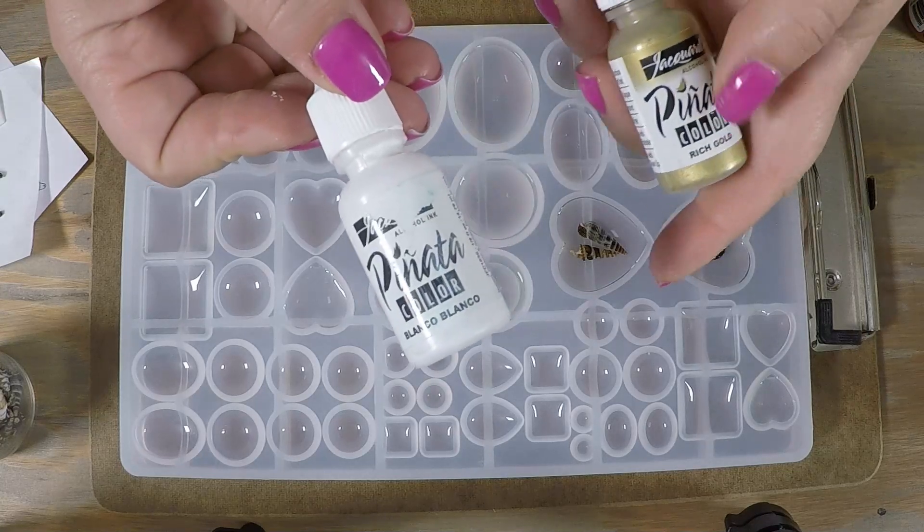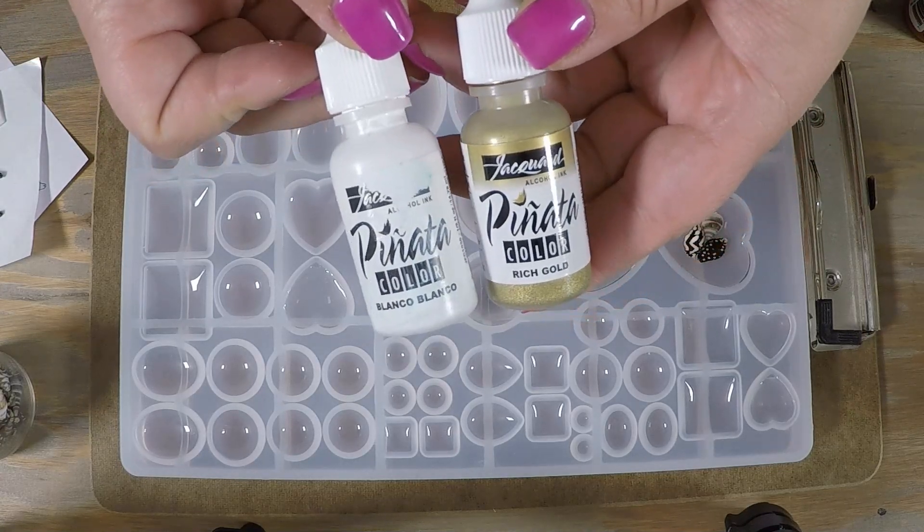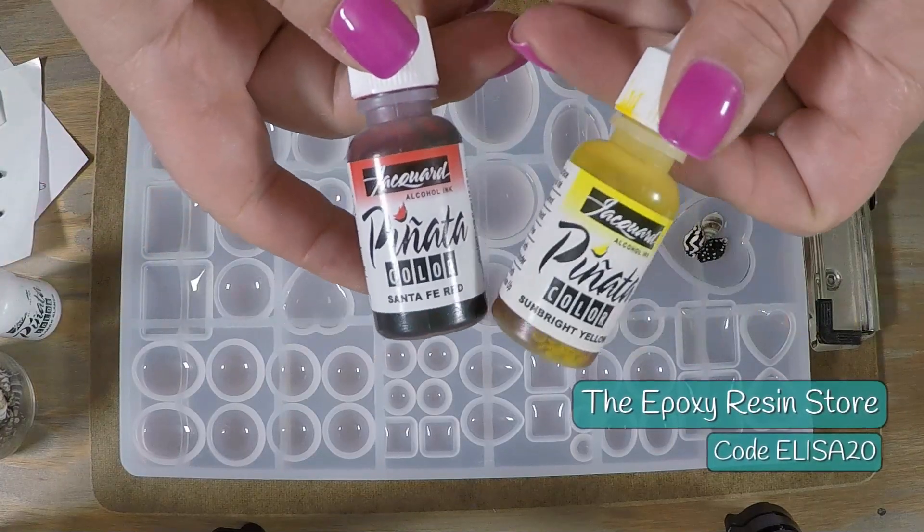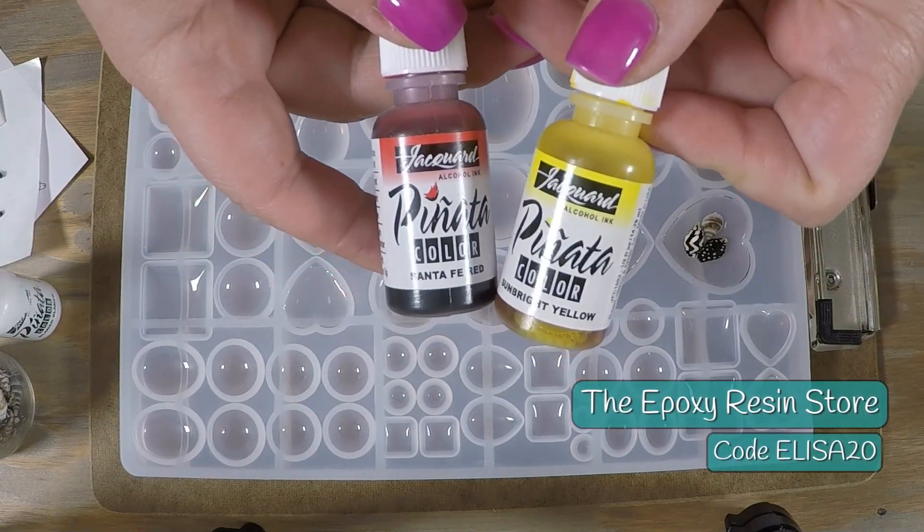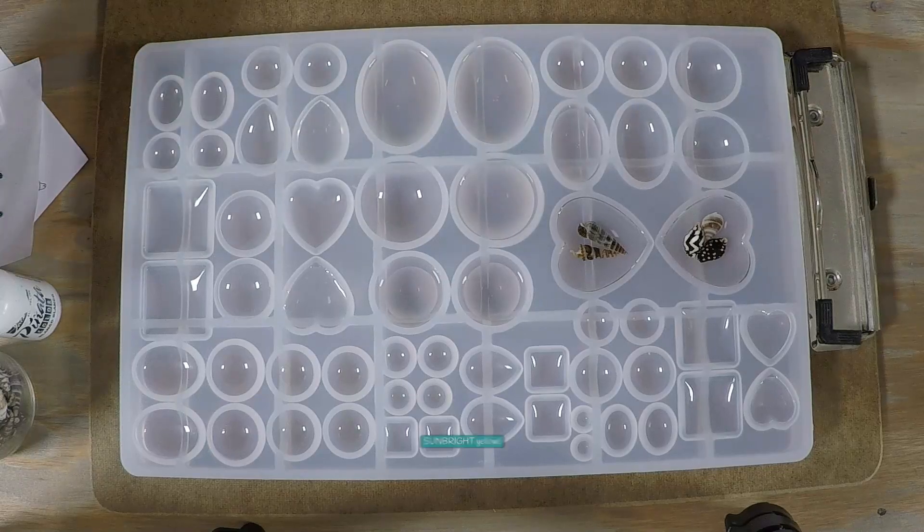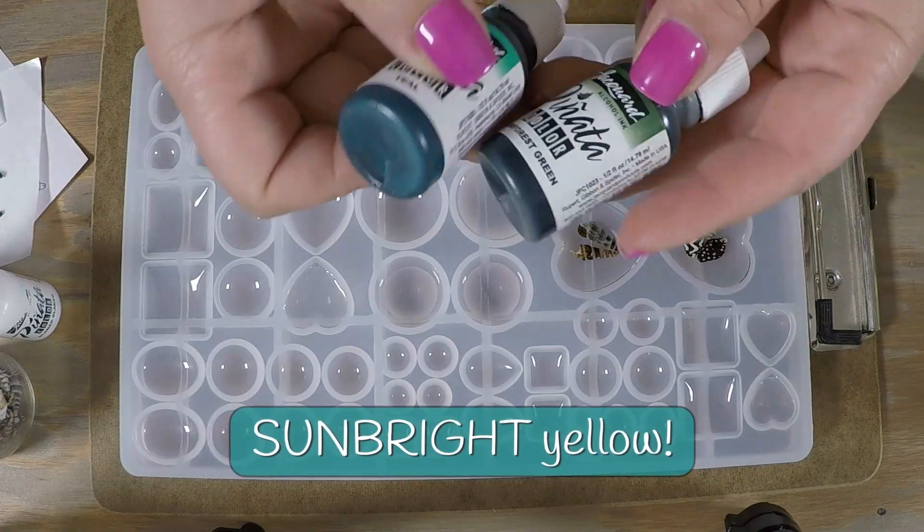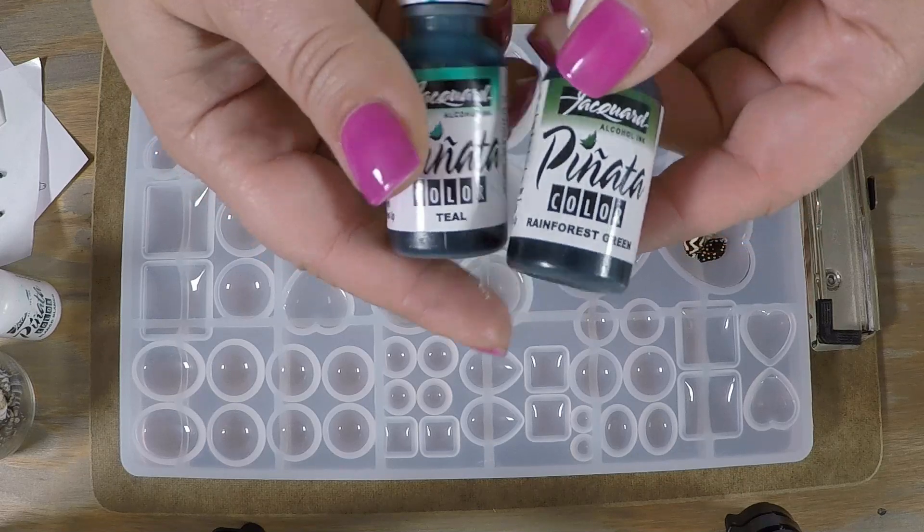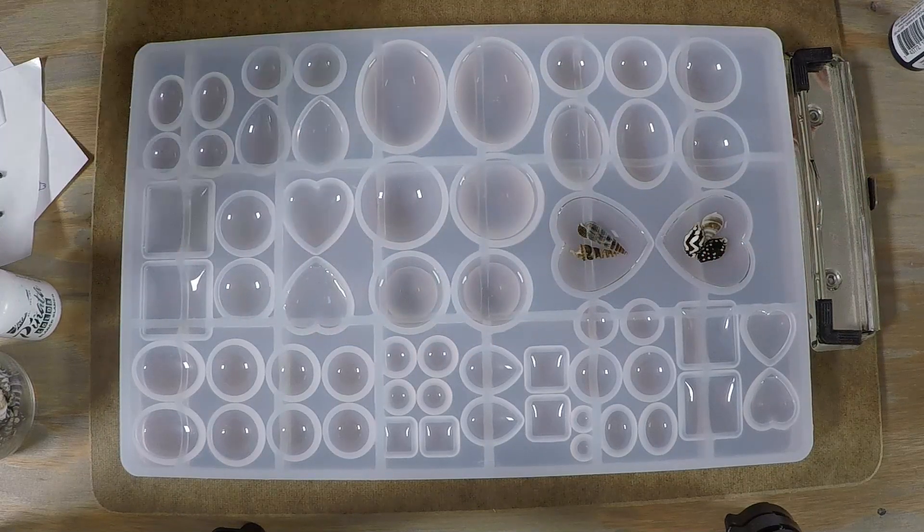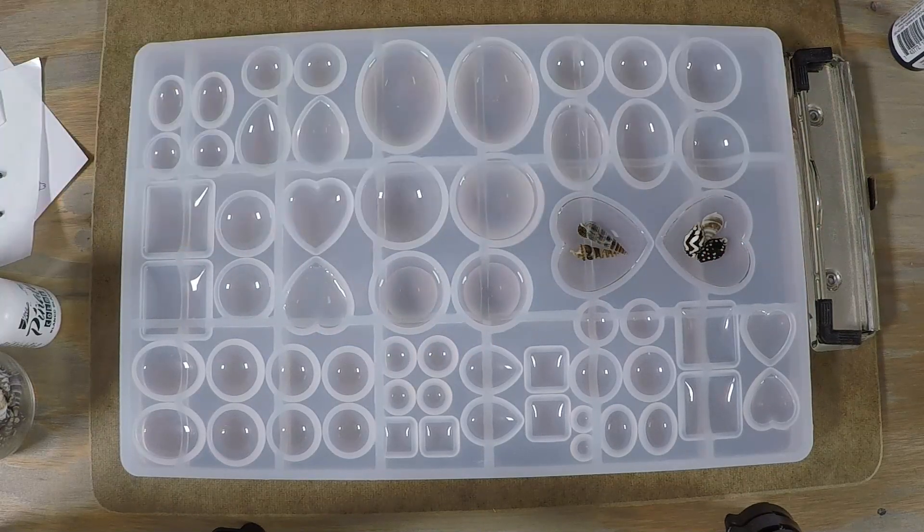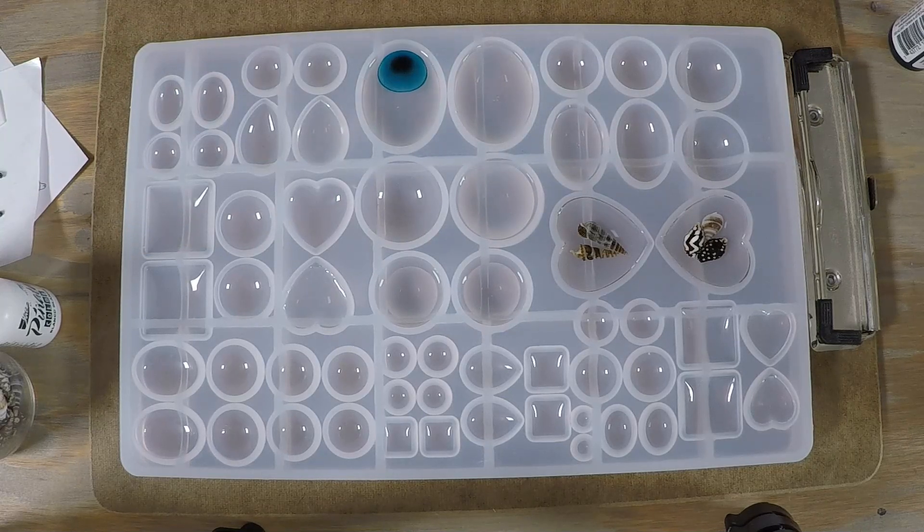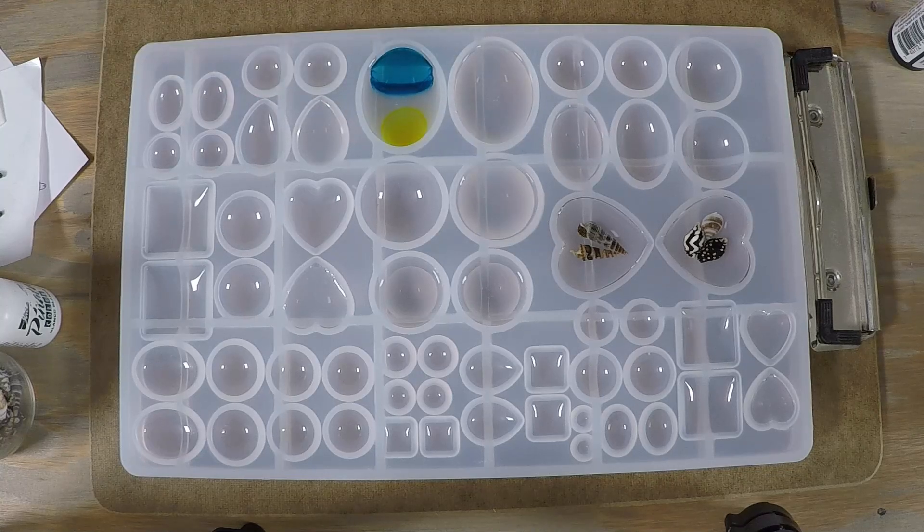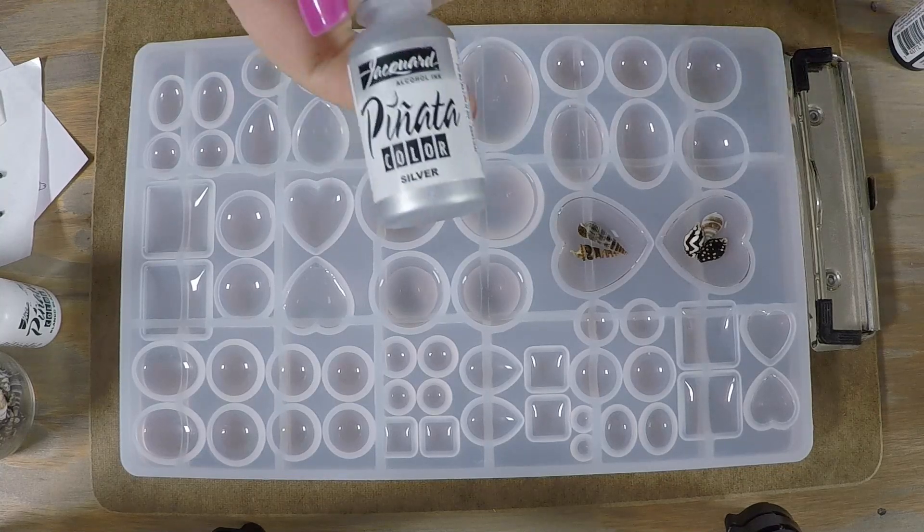I will be doing layers on top of these as well. For some of them I'm gonna use Pinata alcohol inks, which you can also get from the Epoxy Resin Store. I'm gonna use Santa Fe Red, Sunshine Yellow, Teal, and Rainforest Green.